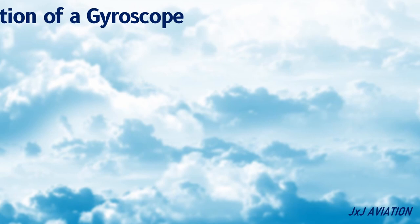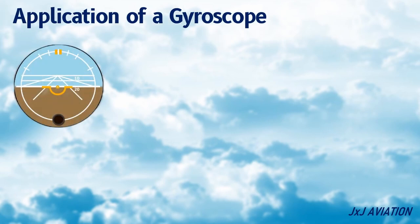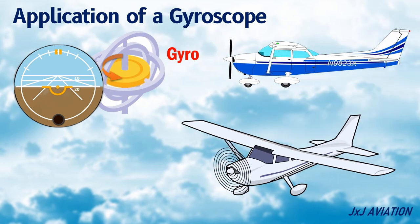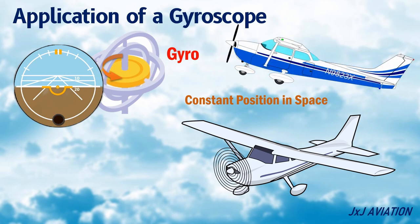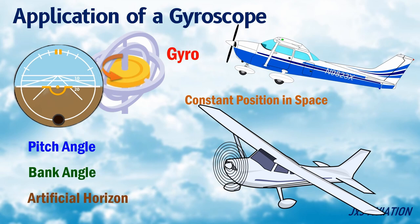Application of a gyroscope. The traditional attitude indicator of an aircraft consists of a gyro which has a rotor spinning at very high speeds. The gyro will maintain a constant position in space even if the aircraft's pitch or bank angle changes. Pitch and bank angle markings and the artificial horizon indication are marked on the gyroscope and they will maintain a fixed position.